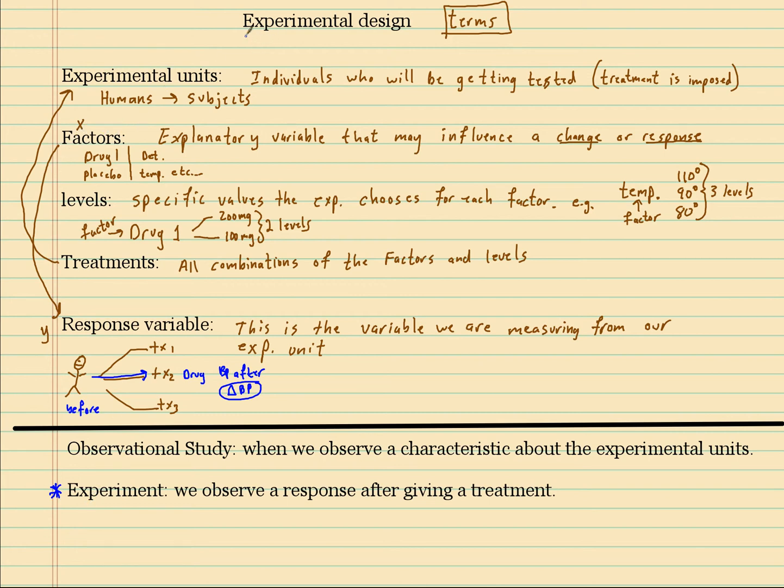These are very important because with experiments we can actually say cause and effect. The whole idea of an experiment is to control the factors that may make a response. All the other factors we want to make the same. The only thing we want to be different is the actual factors that may affect the response.